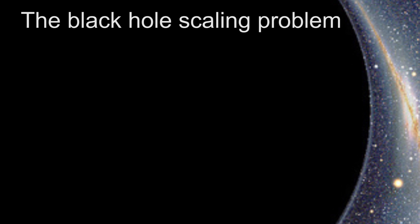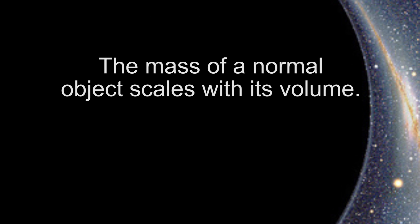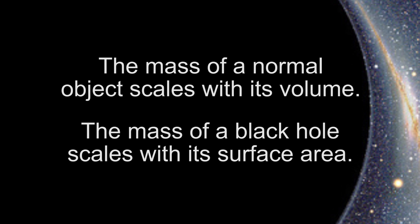The volume of a normal object scales with its mass. If you double the weight of water in a container, for example, you double the volume of water. A black hole doesn't follow this rule. Its weight is proportional to its surface area. So if you double the mass of a black hole, you double its surface area instead of its volume. Current theory fails to account for this.